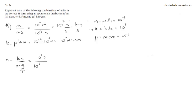But you want it in kilograms, so you have to add another 10 to the negative 3, because one gram is 10 to the negative 3 kilograms.